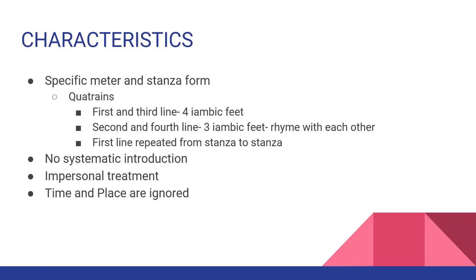The ballad has a specific meter and stanza form. It is usually written in four-line stanzas called quatrains, written in iambic meter. The first and third lines have four iambic feet, and the second and fourth lines have three iambic feet. The second and fourth lines rhyme with each other. Sometimes the first line is repeated from stanza to stanza.